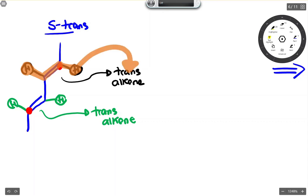So if those H's are trans in the S-trans conformation, they need to be trans in the S-cis conformation. Down here, the same thing is true. Those H's are also trans to each other. So we need to maintain that.